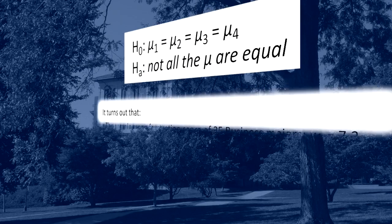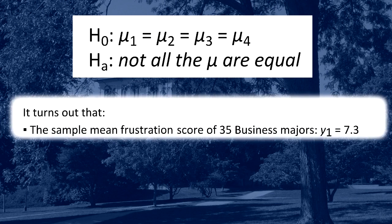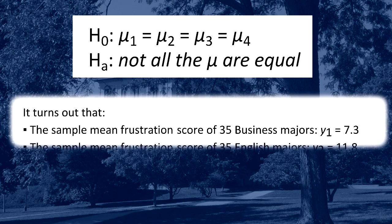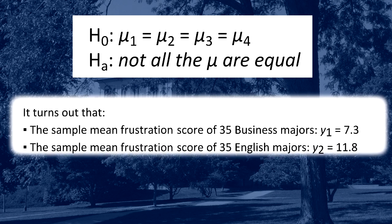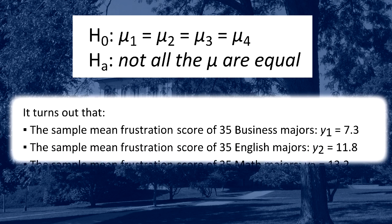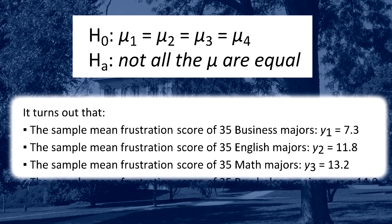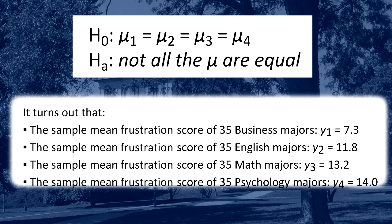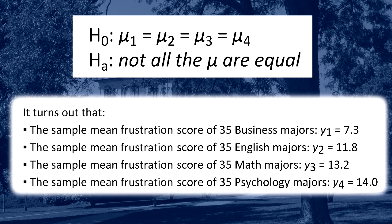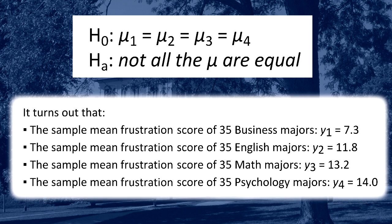It turns out that the sample mean frustration score of the 35 business majors is 7.3. The sample mean frustration score for the 35 English majors is 11.8. The sample mean frustration score for the 35 math majors is 13.2. And the sample mean frustration score for the 35 psychology majors is 14.0.